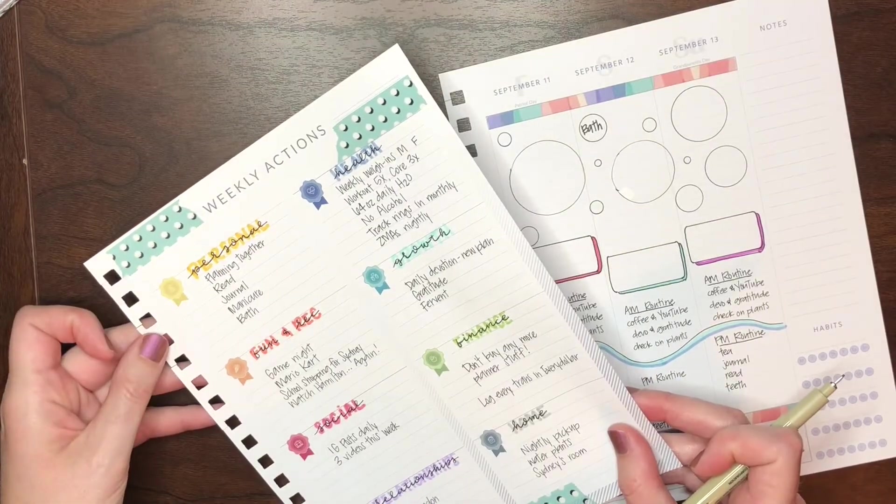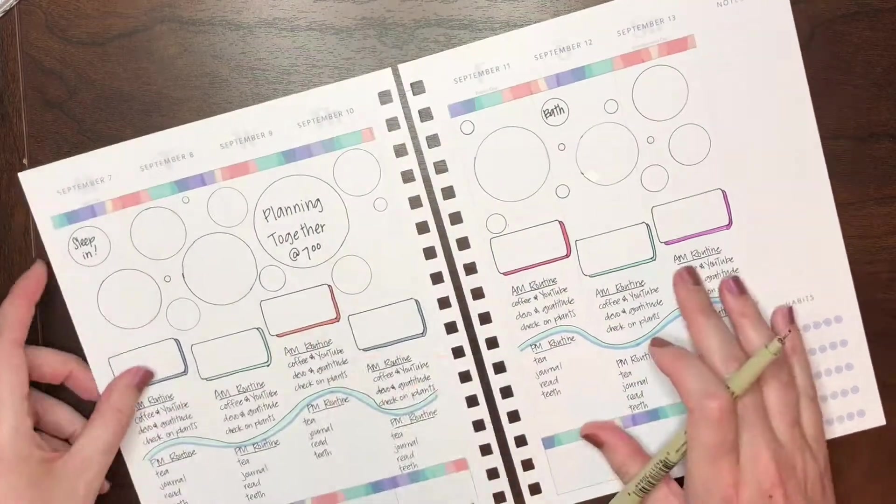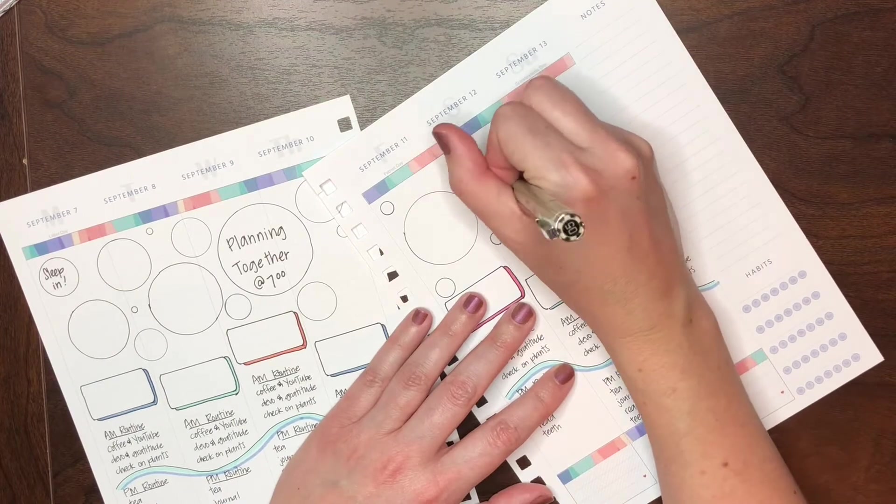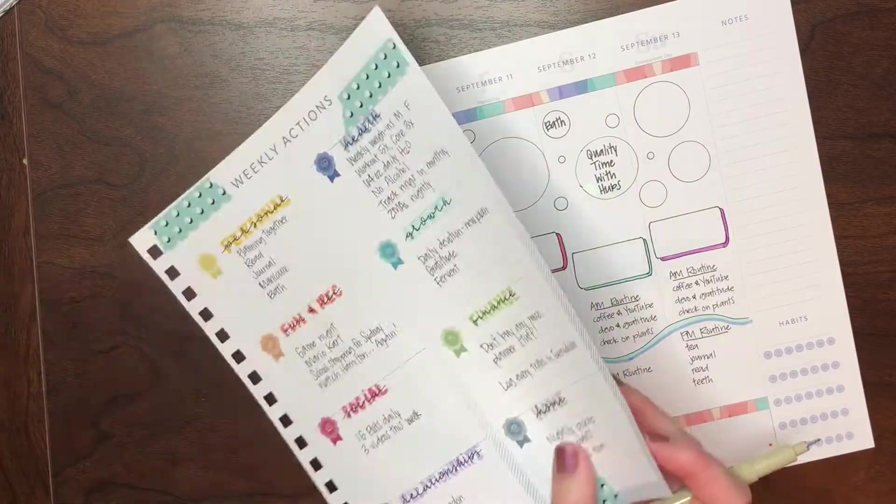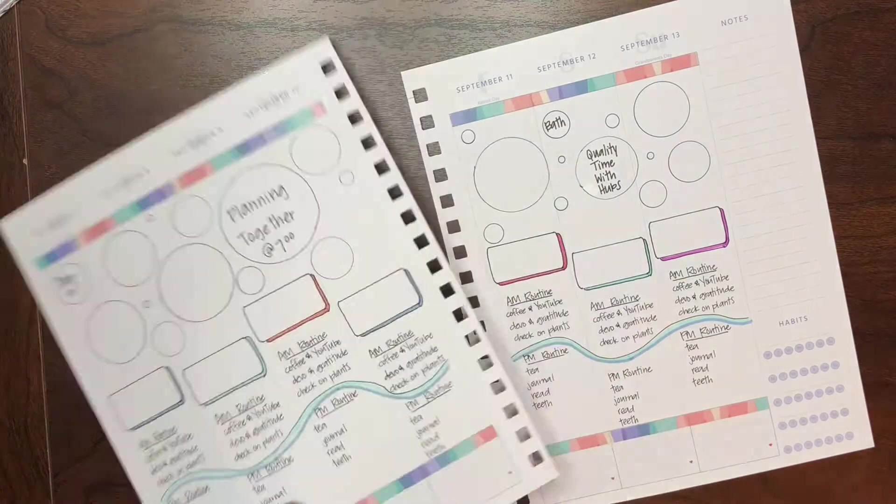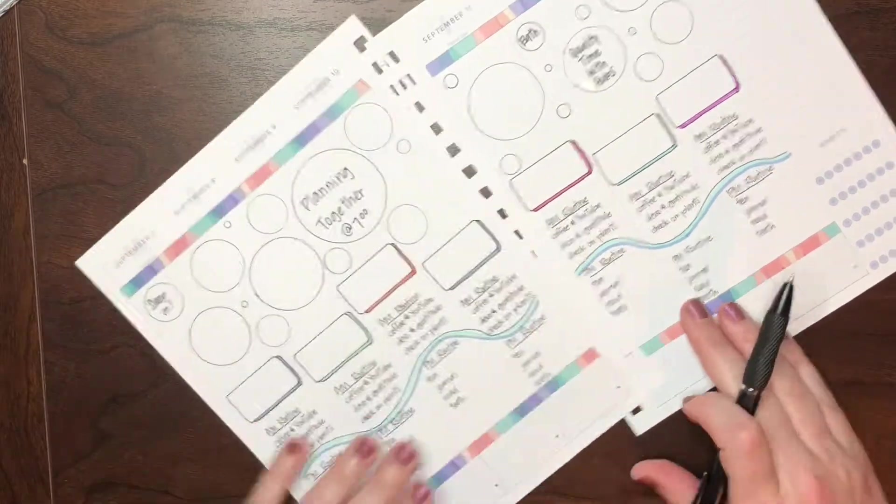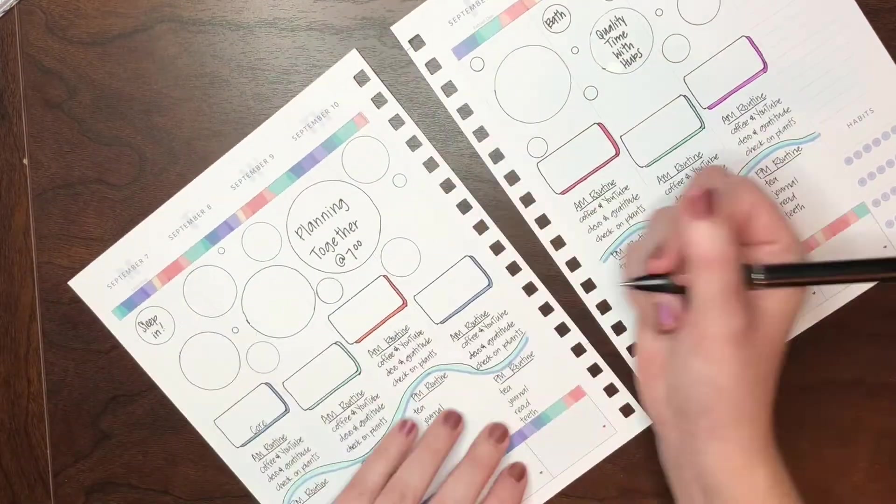And the original plan was to color them in as I did them, but I didn't like that it was kind of bare on the color. So that kind of changed a little bit, but you'll have to follow me on Instagram to see how this spread actually ends up.